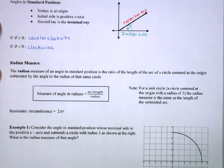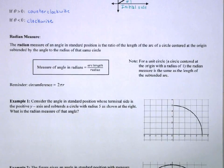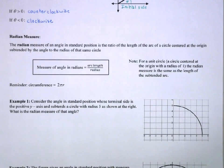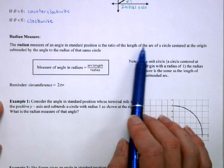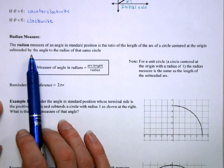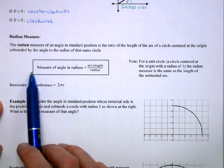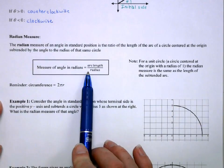In AP Precalculus, we will be measuring angles using something called a radian. You're probably familiar mostly with using degrees, especially from your geometry class, but in pre-calc we use radians. So, the radian measure of an angle in standard position is the ratio of the length of the arc of the circle centered at the origin, subtended by the angle to the radius of that same circle. In a formula, the measure of an angle in radians is the arc length divided by the radius.